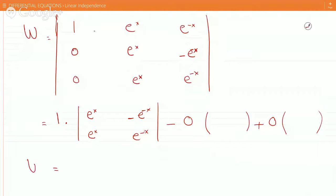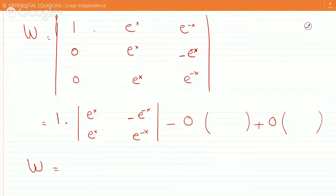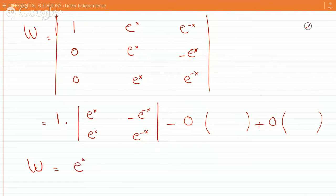So then the Wronskian will be minus e to the zero, right? Because e to the x times e to the minus x equals e to the zero, minus, minus, plus, e to the zero, so you would get one plus one, so you would get two.